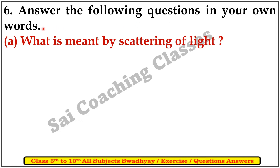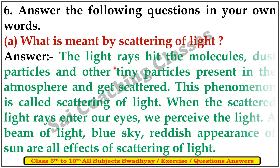Answer the following questions in your own words. The light rays hit the molecules, dust particles, and other tiny particles present in the atmosphere and get scattered. This phenomenon is called scattering of light. When the scattered light rays enter your eyes, we perceive the light. A beam of light, a blue sky, and the red appearance of the sun are only some examples of scattering of light.